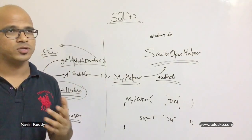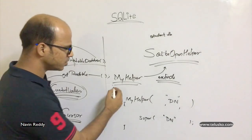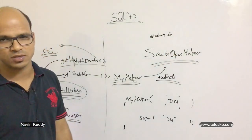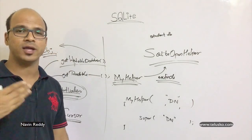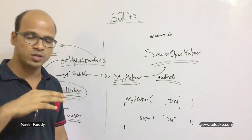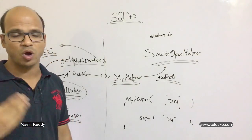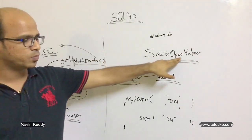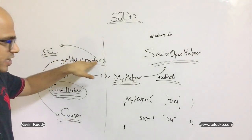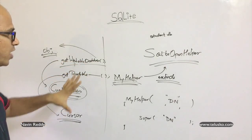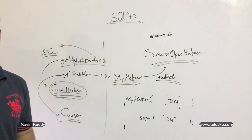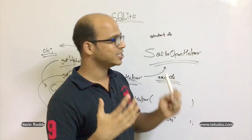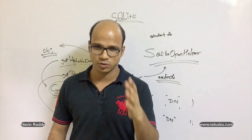The next question is where to specify the query — creating tables, deleting databases, etc. In the MyHelper class, since it extends SQLiteOpenHelper, two methods are very important: onCreate and onUpgrade. You can create a table in the onCreate event and modify the database in onUpgrade. To summarize: the key class is SQLiteOpenHelper, key methods are getWritableDatabase and getReadableDatabase, and key data structures are ContentValues and Cursor. Make sure to watch the practical session after this video to understand exactly how to work with SQLite databases.